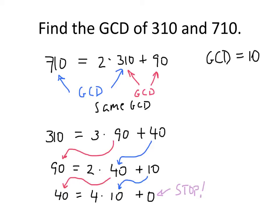In practice, what this means is that the last non-zero remainder, which is this 10 right here, that's your GCD, the last non-zero remainder.